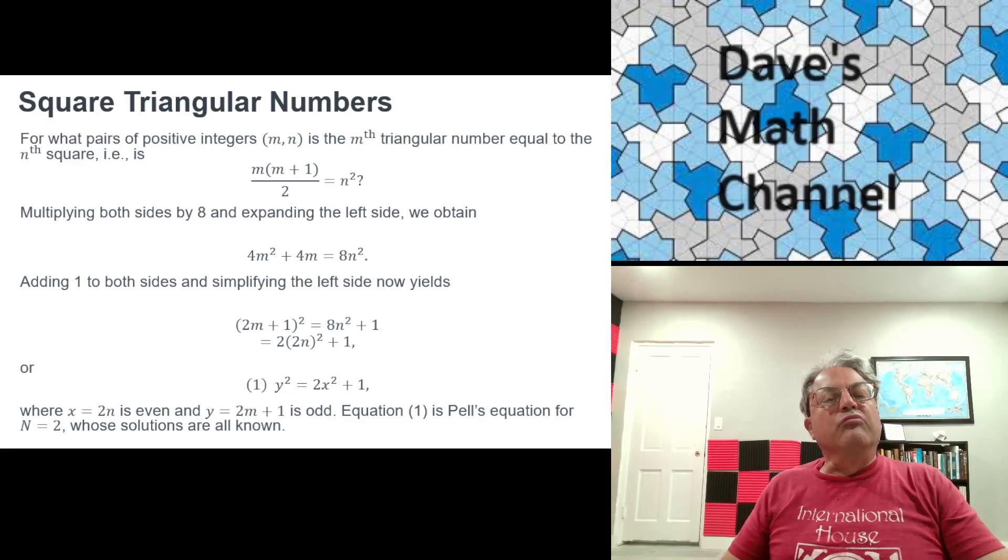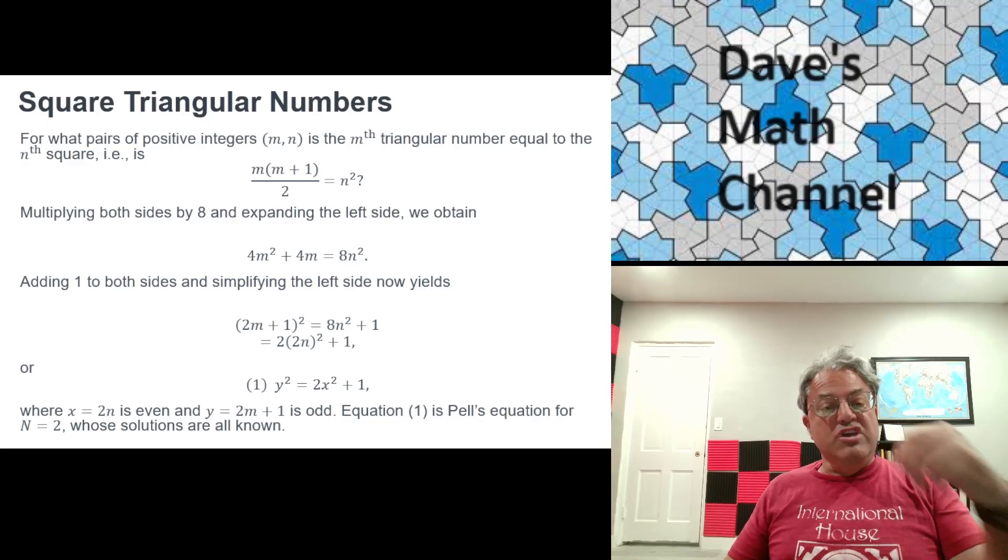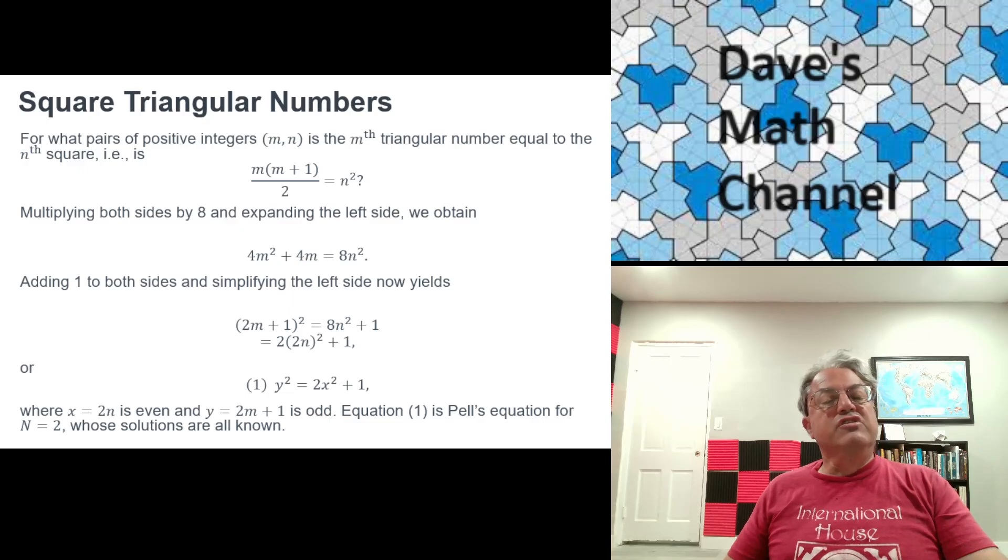Well, what we do is a little bit of algebra first. It turns out that if we multiply both sides by 8, you get 4m squared plus 4m equals 8n squared. Then you add 1 to both sides. And notice that when you do that, you get a perfect square on the left.